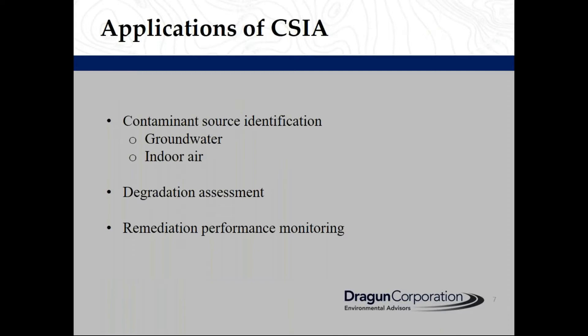What are the applications of CSIA? It can be used in environmental forensics to identify the source of contamination in groundwater and also in indoor air. It can be used to understand whether contaminants are degrading or not, and it can also be used to monitor the performance of active remediation techniques.